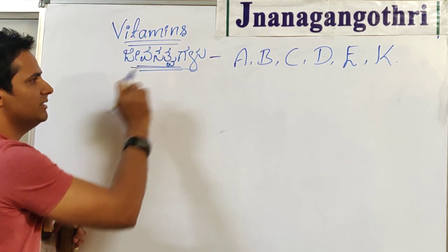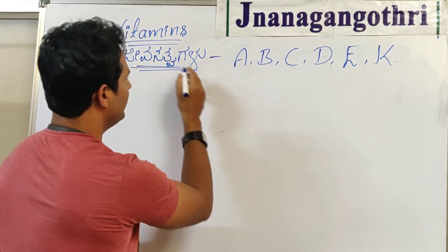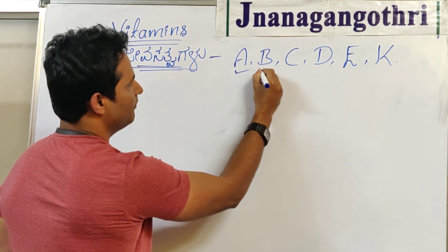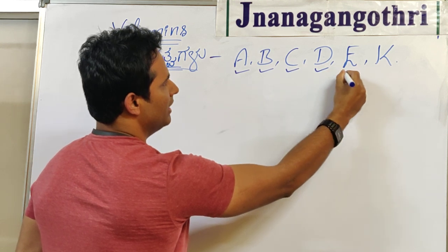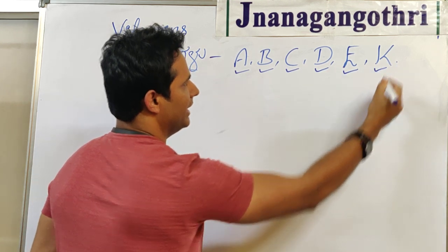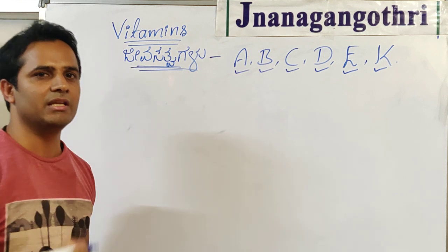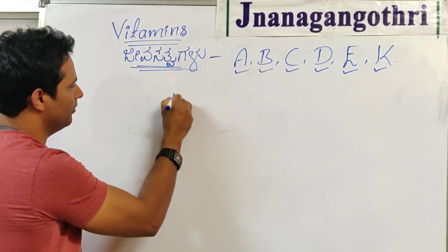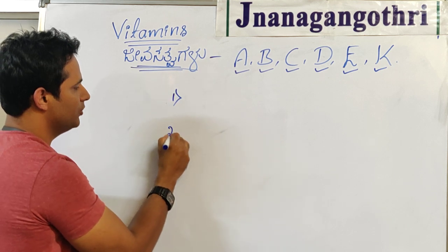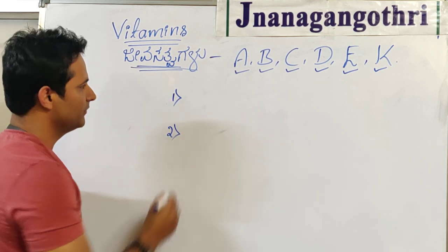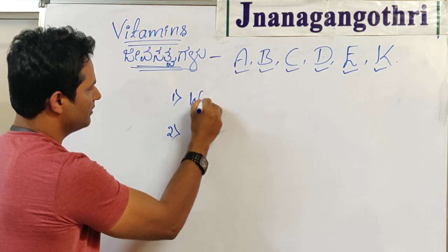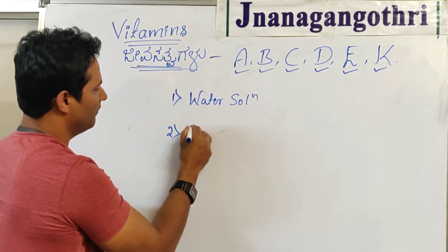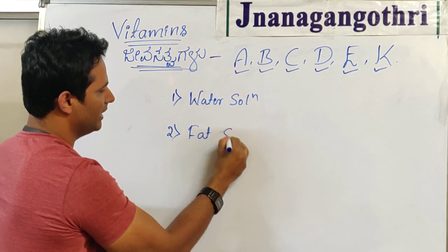Whenever we talk about vitamins (Jeeva Sattva in Kannada), there is vitamin A, vitamin B, vitamin C, vitamin D, vitamin E, and K. First and foremost, we should divide all the vitamins into two categories. One is called water-soluble vitamins.